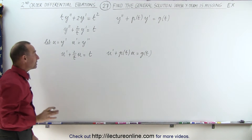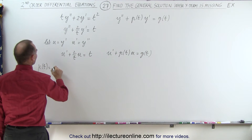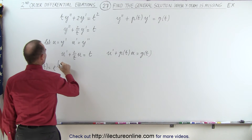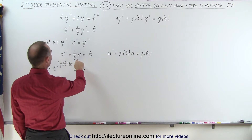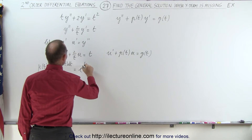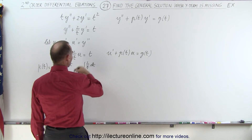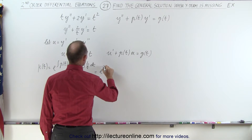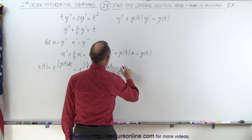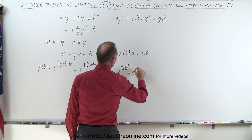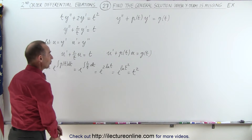To solve this we now need an integrating factor. The integrating factor mu of t is equal to e to the integral of p of t dt. Since p of t is 2 over t, this becomes e to the integral of 2 over t dt. Taking the 2 out, this becomes e to the 2 times the natural log of t, which can be written as e to the natural log of t squared, which is equal to t squared.